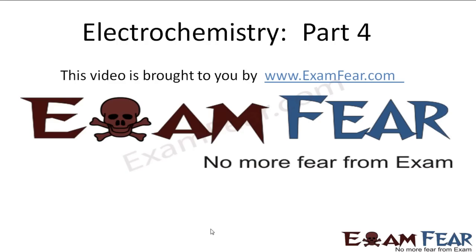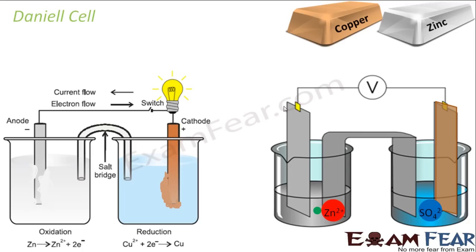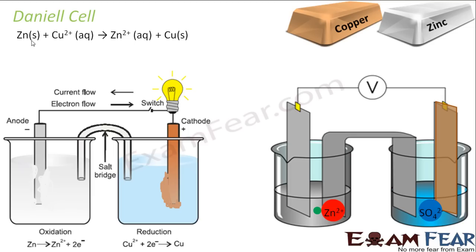This video on electrochemistry part 4 is brought to you by examfear.com. Let's understand the Daniel cell. This cell has zinc and copper as electrodes. Zinc looks almost like silver and copper you must have seen. The reaction is: zinc plus copper sulfate gives zinc sulfate and copper. Zinc is more reactive than copper, so zinc becomes Zn2+ and copper is reduced to copper.